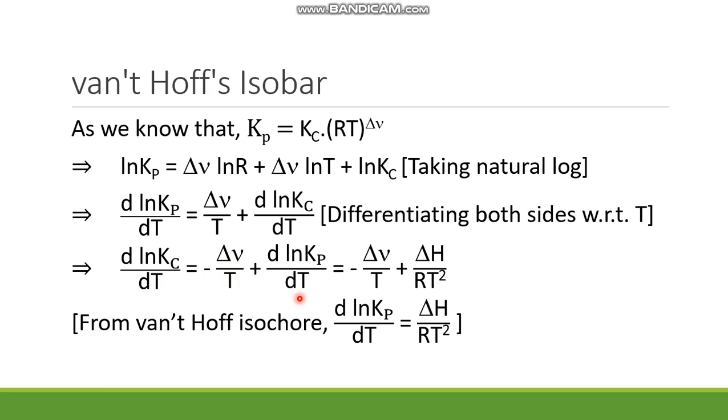We know that from the van't Hoff isochore that d ln Kp by dT equals delta H by RT squared. So we put this value here, delta H by RT squared, in place of d ln Kp by dT. So we get minus delta nu by T plus delta H by RT squared. And here we have to mention from where we are getting this value.